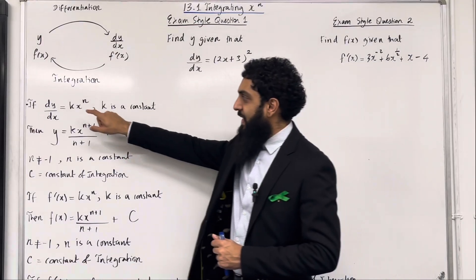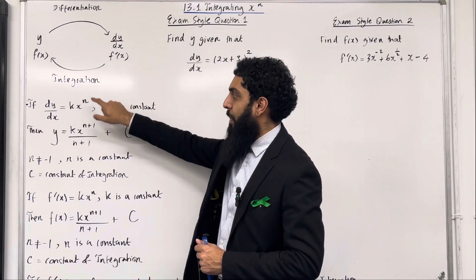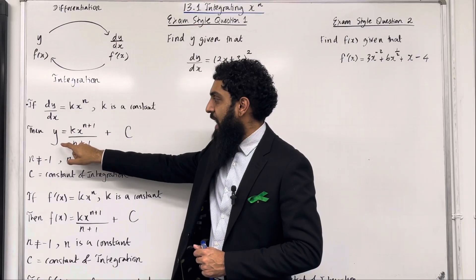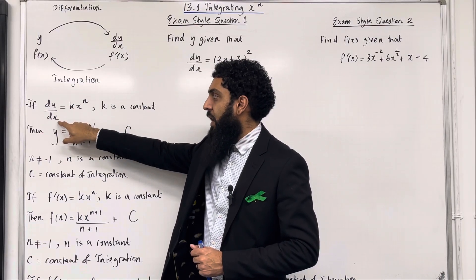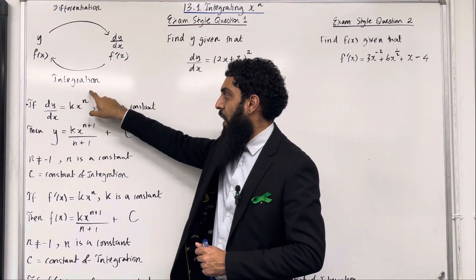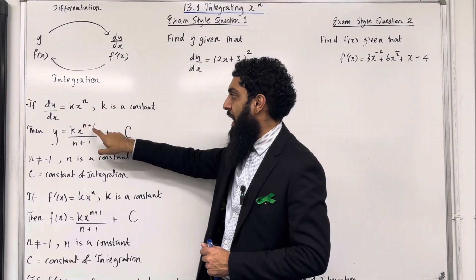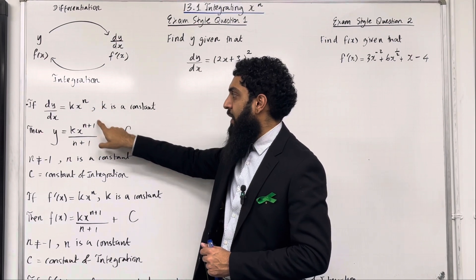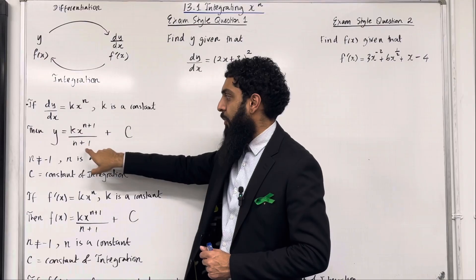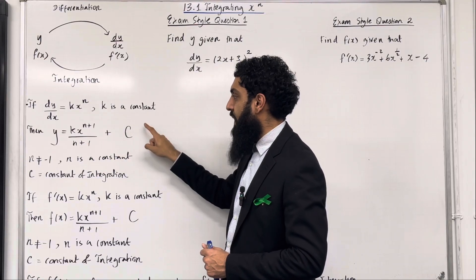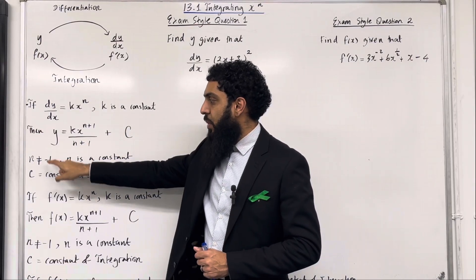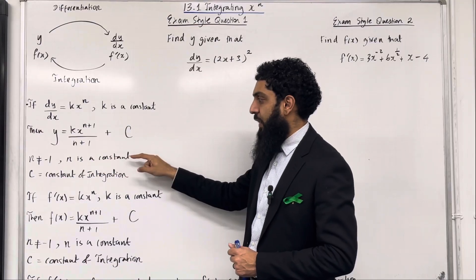If dy/dx is equal to kx to the power n, where k is a constant, then y is obtained by integrating dy/dx — in other words, integrating kx to the power n. You take the power n, add 1 to get n+1, then divide by n+1, plus c, the constant of integration. Note that n is not equal to minus 1, and n is a constant.